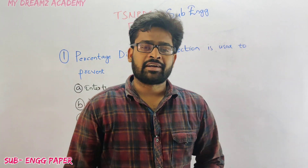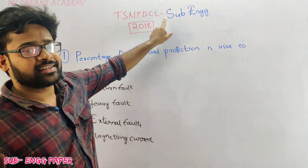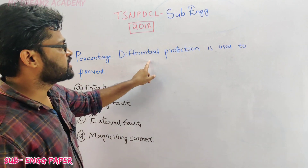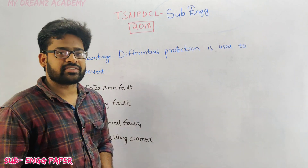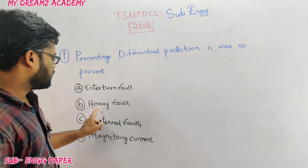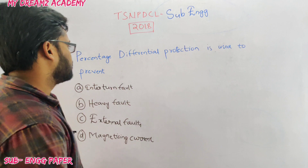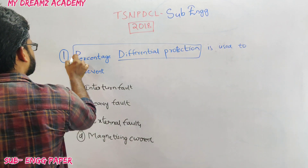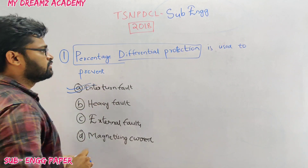Hello everyone, welcome to my Dreams Academy. Today we are going to see TSNPDCL sub-engineering paper explanation. Question number one: percentage differential protection is used to prevent — options include inter-turn fault, heavy fault, external fault, magnetizing current. Percentage differential protection is used to prevent internal fault.